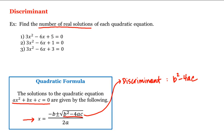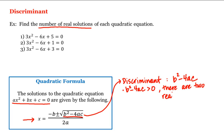If the discriminant b²−4ac is a positive real number, then there will be two real solutions: (−b + √(positive)) / 2a and (−b − √(positive)) / 2a. So in this case there are two real solutions.